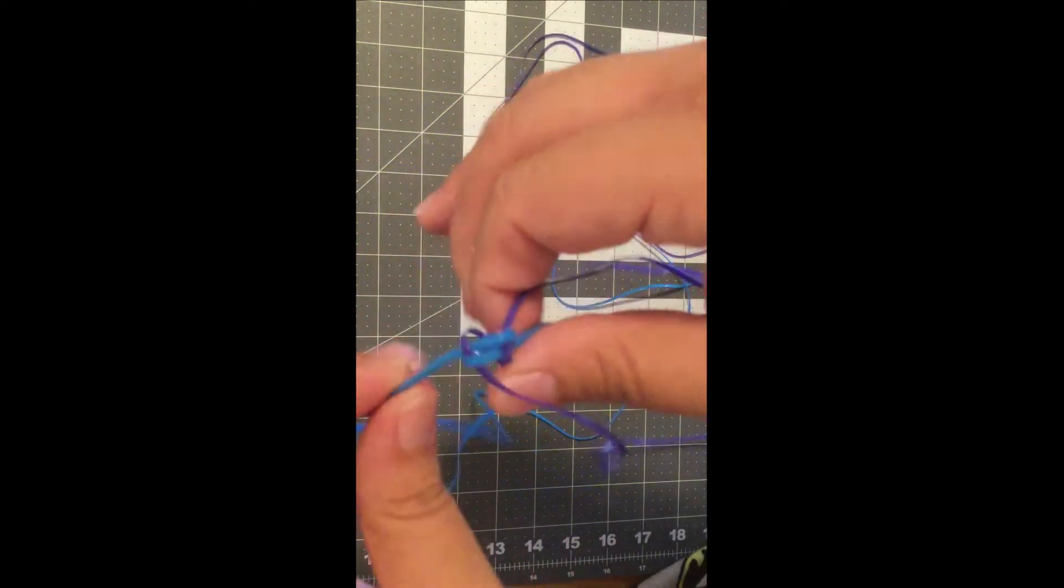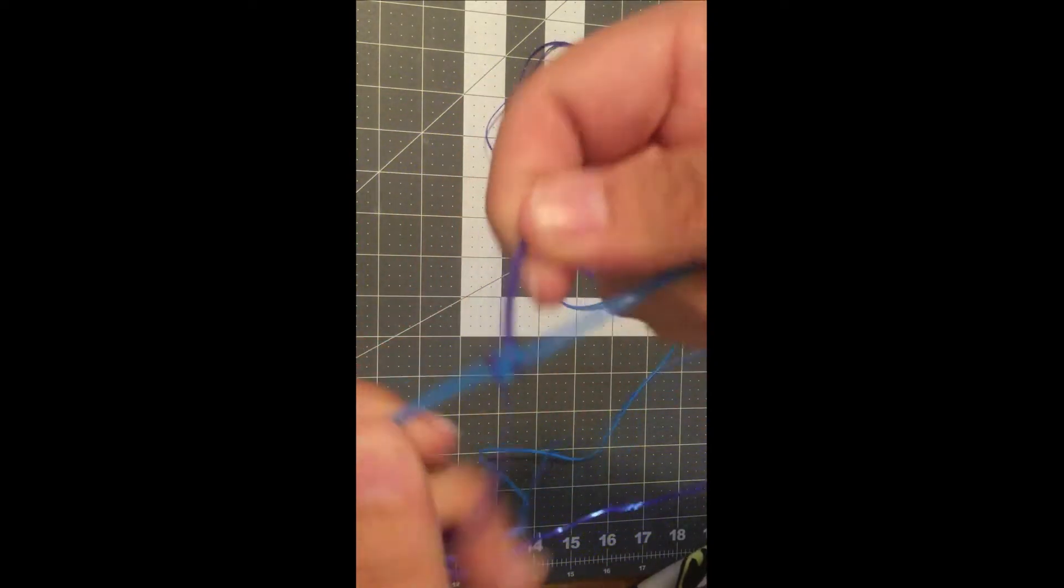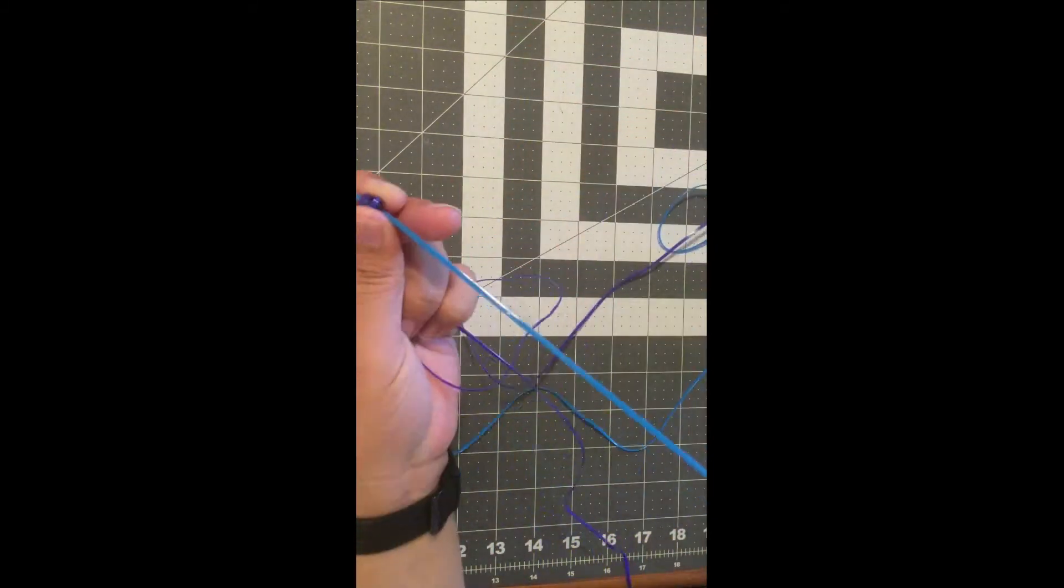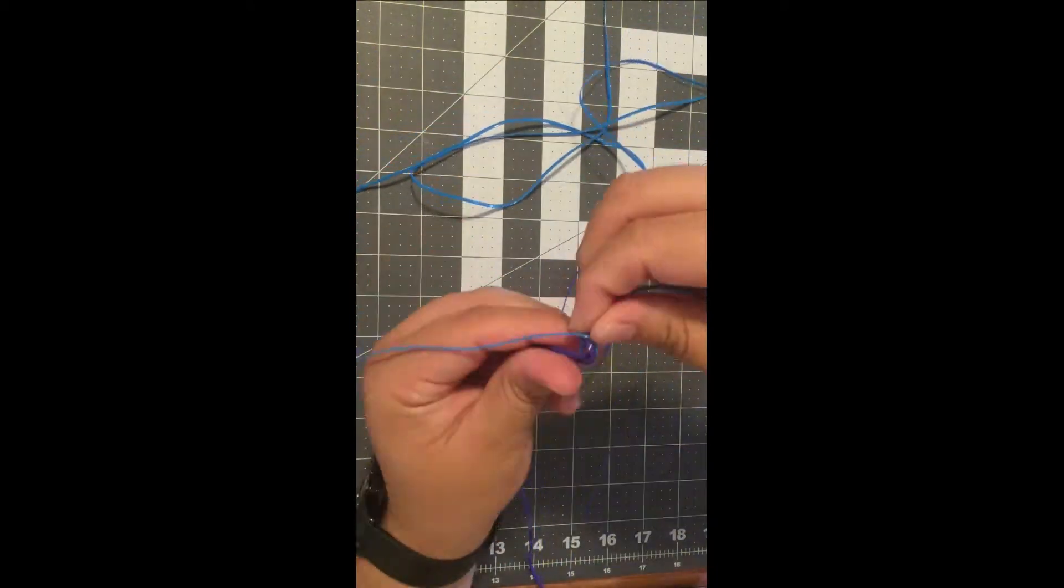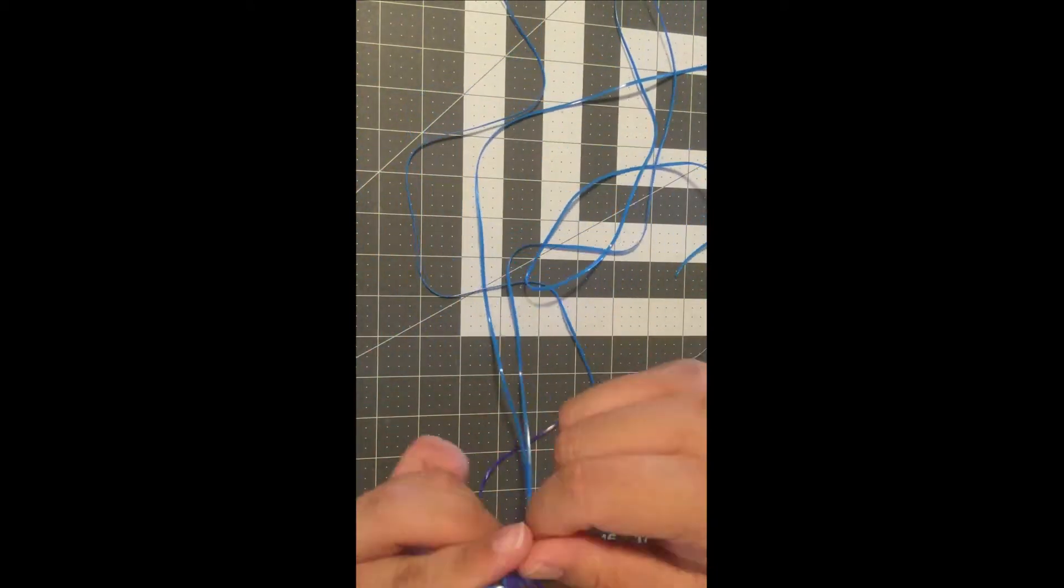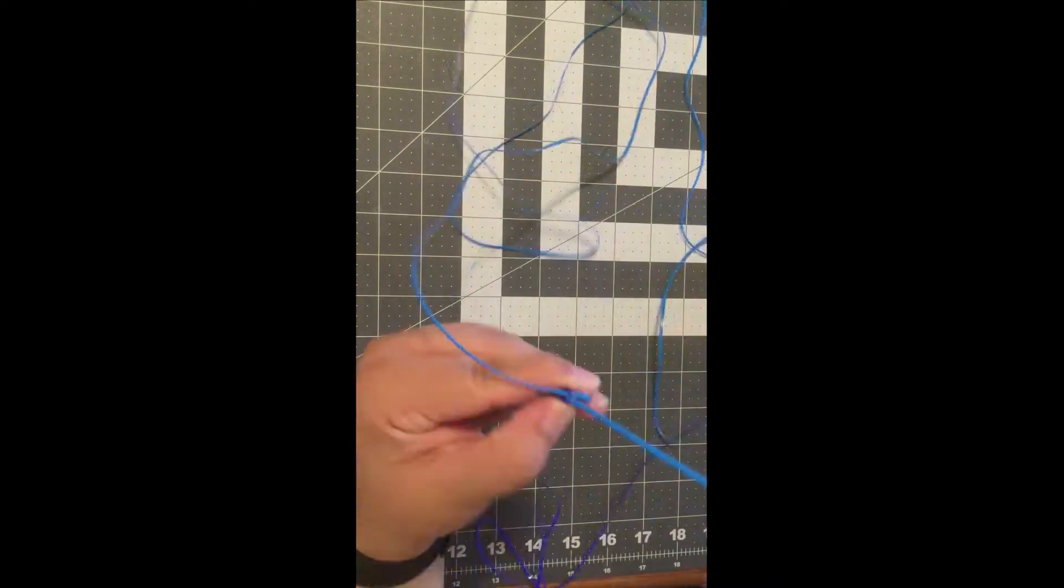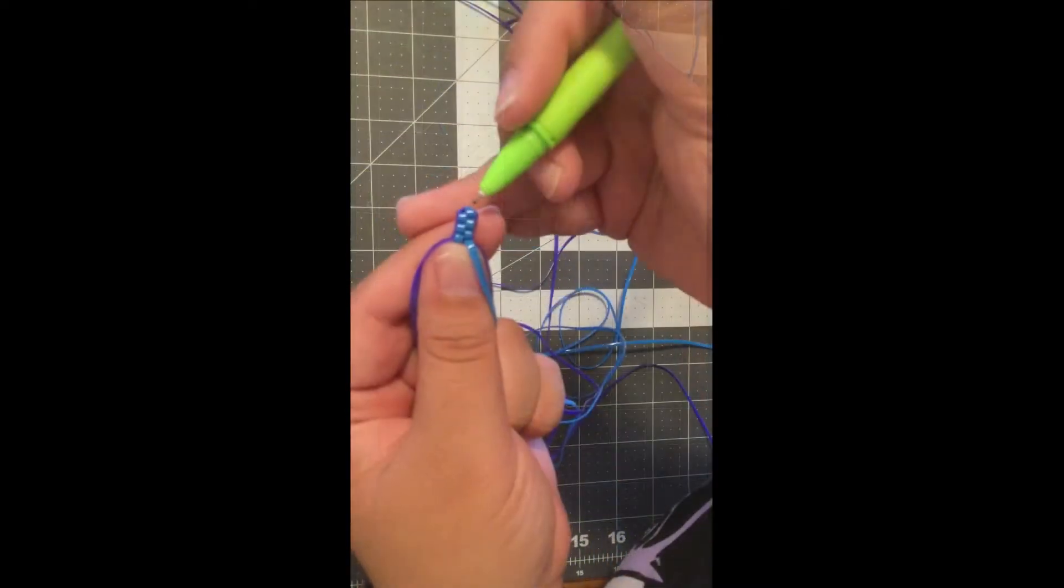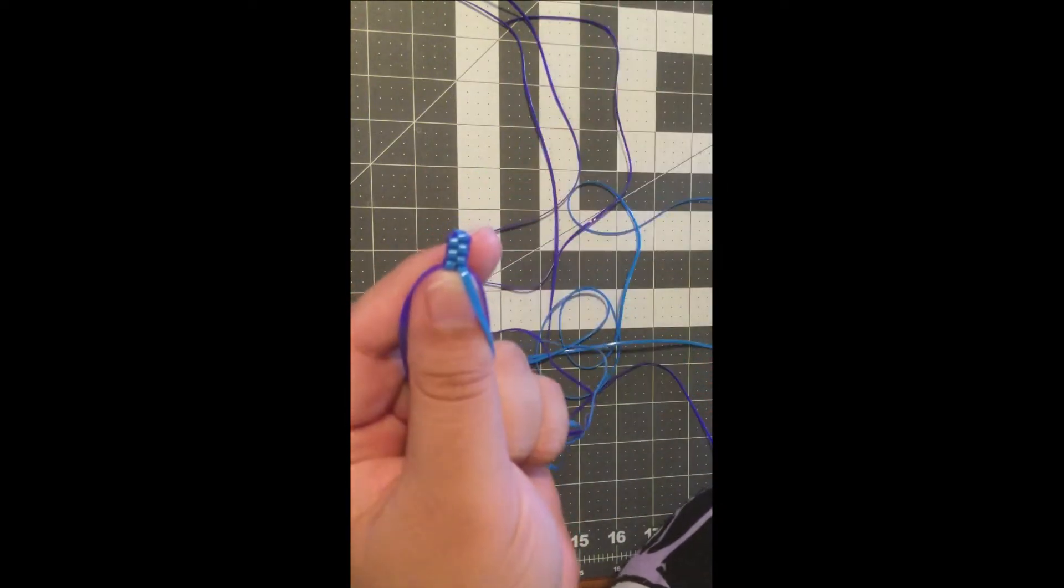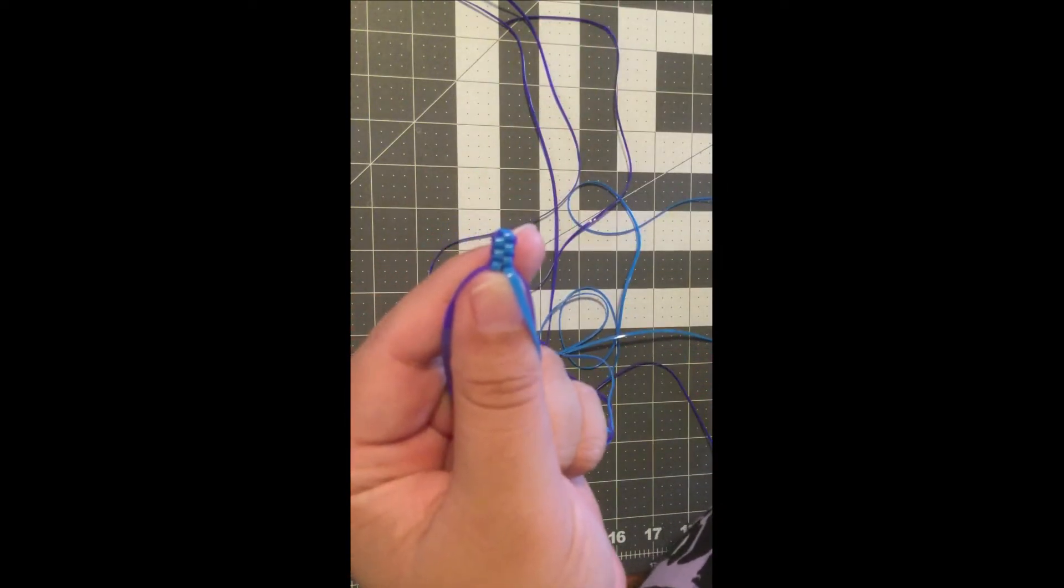Make sure to pull on your cords tightly. Continue to make boxes. Every box you do is a layer. I decided to do 40 layers before I added a bead. You can do however many layers you want. You can count your layers by counting the bumps on the side of your lanyard. Every bump is a layer so that's how you can keep track of how many you've done.